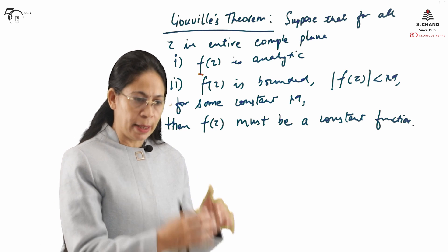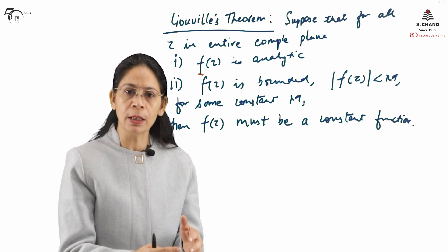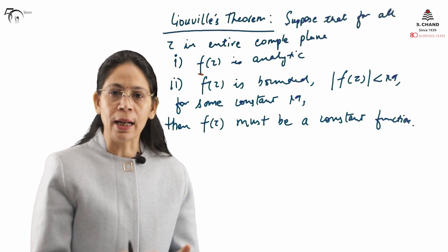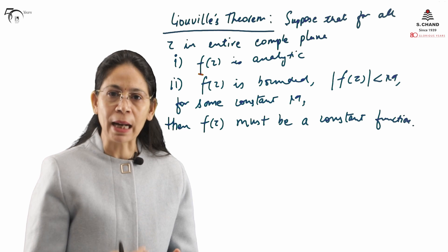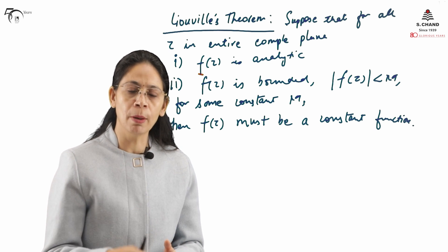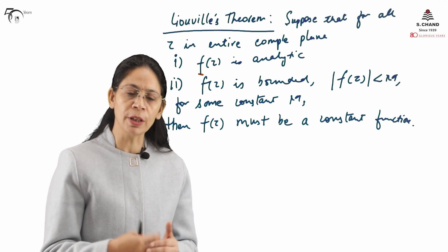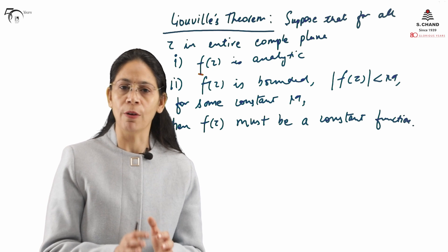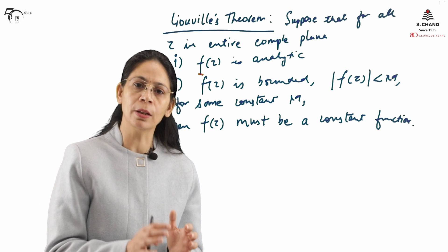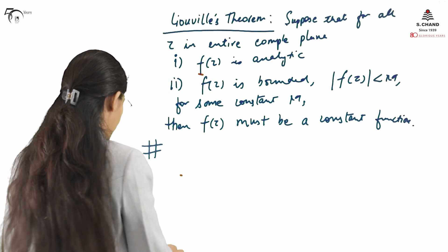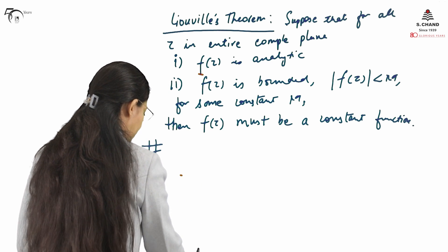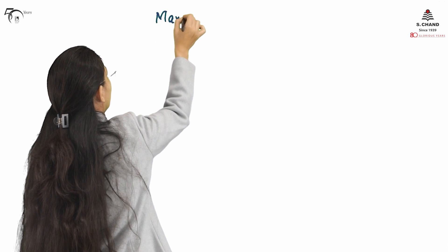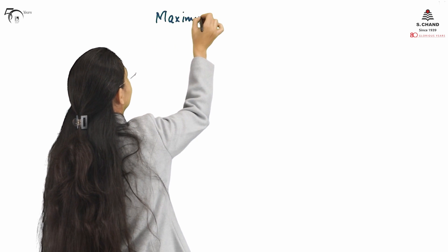Liouville's Theorem tells us whether F(z) is a constant function or not. Then, the Maximum Modulus Theorem and Minimum Modulus Theorem give us the maximum value and minimum value of F(z) respectively. We will go through them one by one, starting with the Maximum Modulus Theorem.